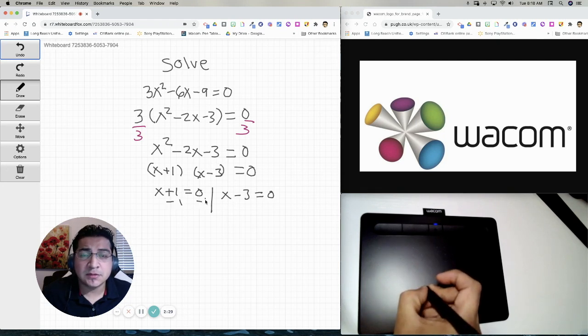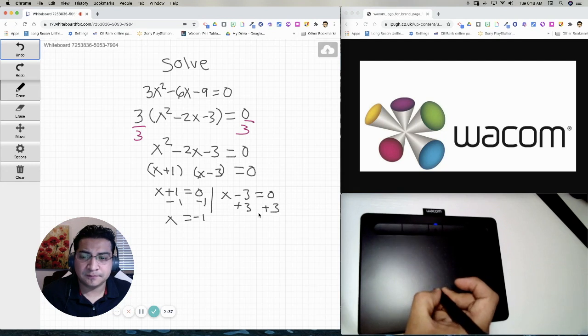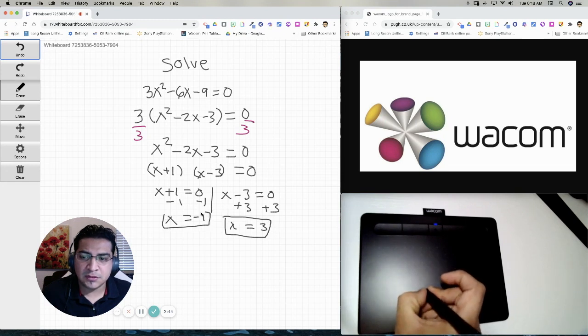So this will be minus 1, minus 1. And so I'm showing every single step so that you guys can see the beauty of using the tools here. So plus 3, plus 3, x equals to 3. Okay, and that is how you do this problem. Now those are the zeros. Okay, those are the zeros.